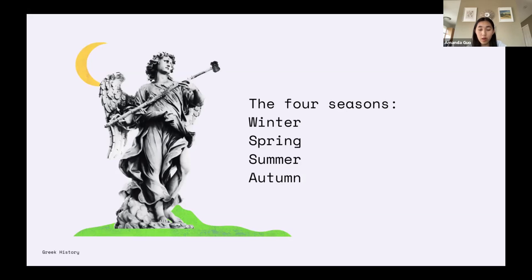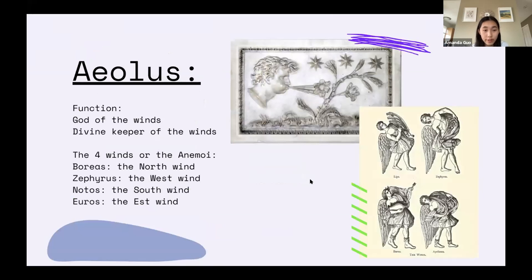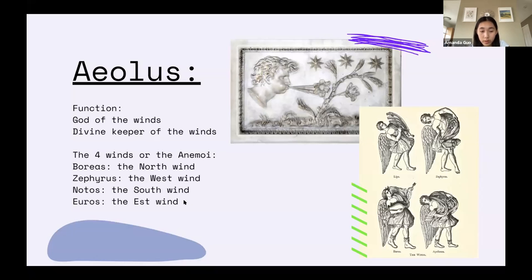The next god we're going to talk about is Aeolus. Aeolus is the god of winds and the divine keeper of the winds. He lives on top of a mountain, and at the bottom there's a big cavern containing the four winds, or Anemoi. The first is Boreas, the north wind; then Zephyrus, the west wind; Notus, the south wind; and Euros, the east wind. These four winds are chained in the cavern, and when Aeolus wants them to blow in a certain direction, he lets them out.